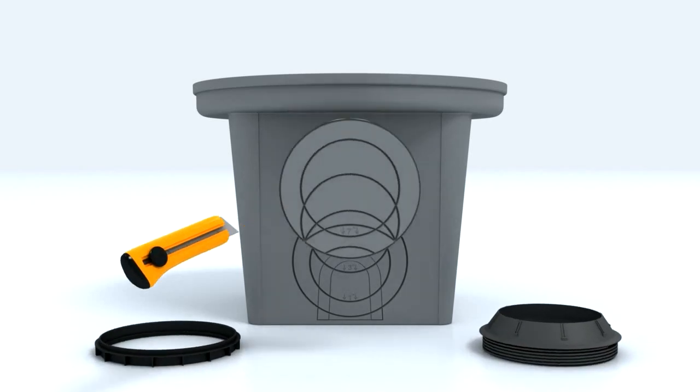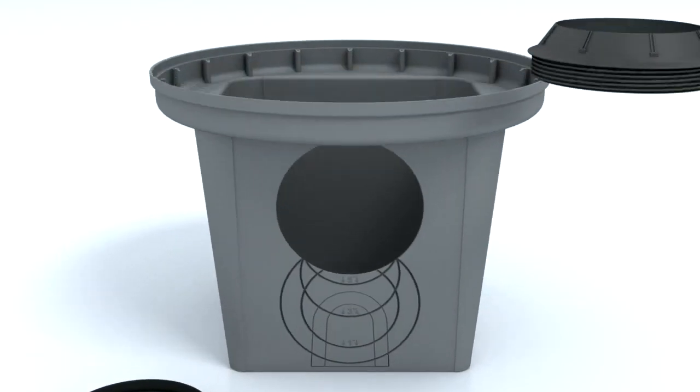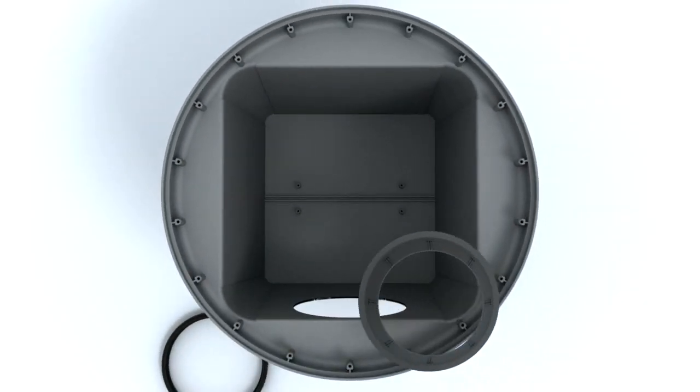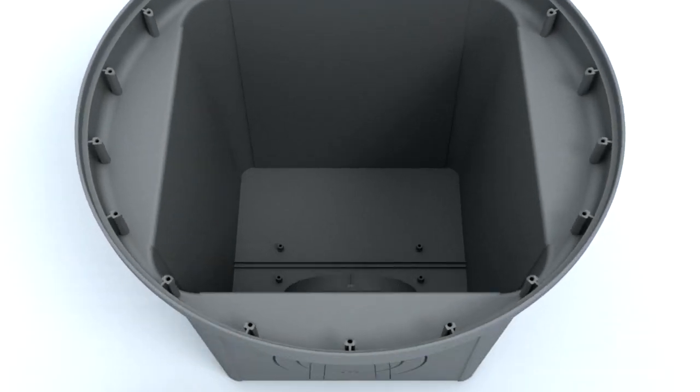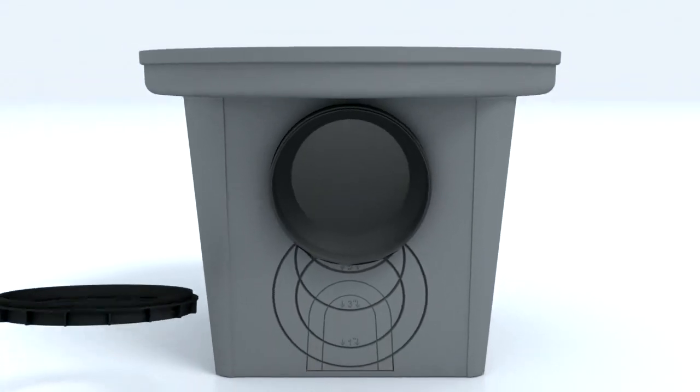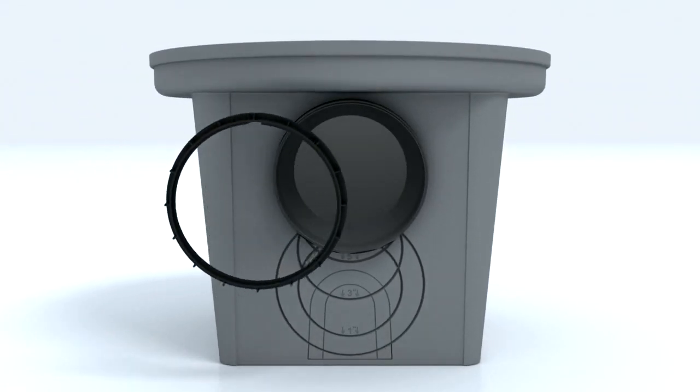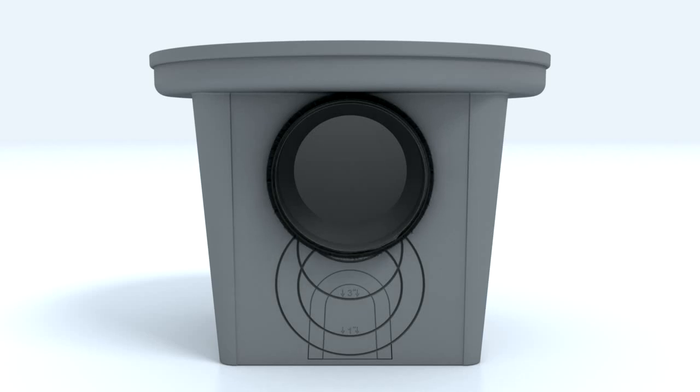Install the D-Box seal from the inside of the box. While applying slight pressure to the seal from inside the box, install the seal nut from the outside of the box. Rotate the nut clockwise until tightened. This will provide a watertight seal.